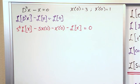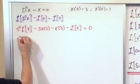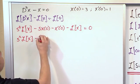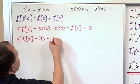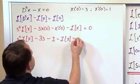So far it's really not too bad. And then what we want to do is plug in our initial condition, so we have s² Laplace of x minus x(0) is 3, so we'll have 3s minus the derivative at 0 is just 1, minus Laplace of x is equal to 0.